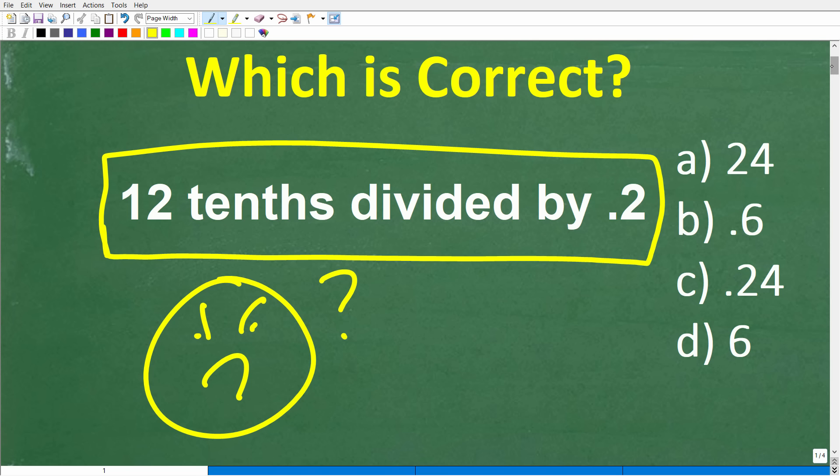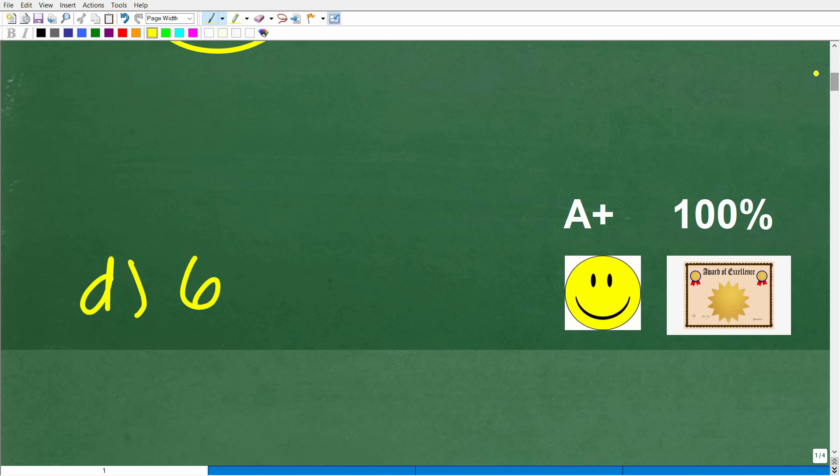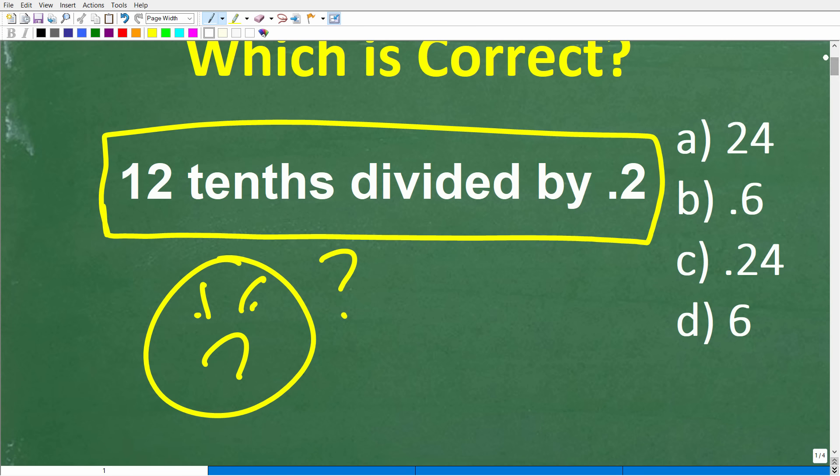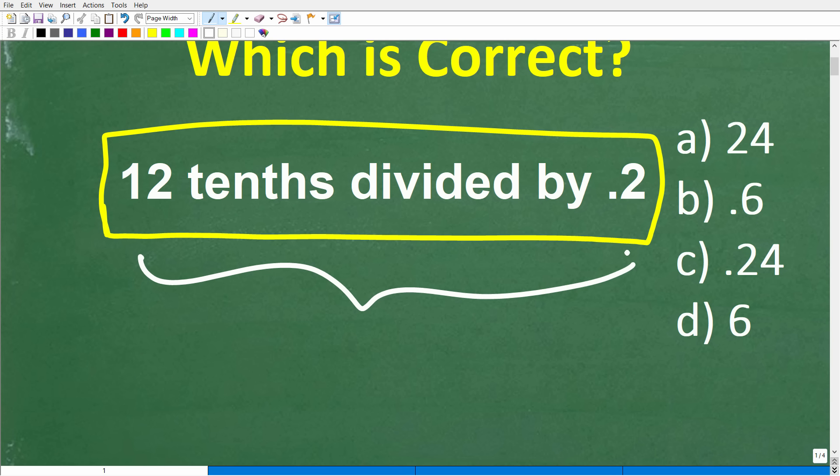The correct answer is D, 6. If you got this right, you definitely get a happy face and a certificate of excellence for being a certified professional expert in the area of place value.